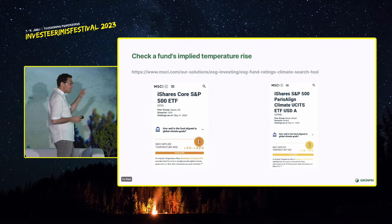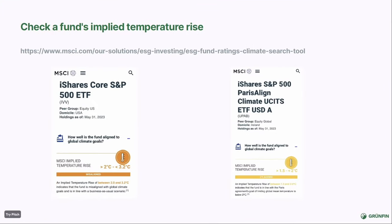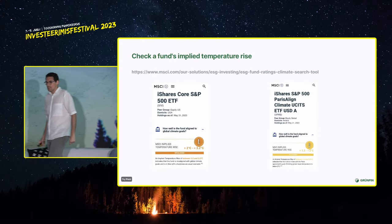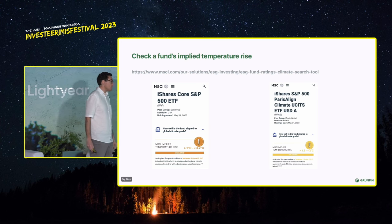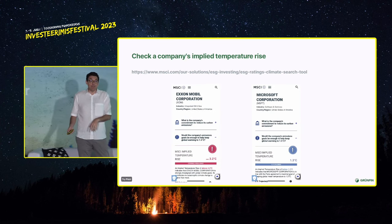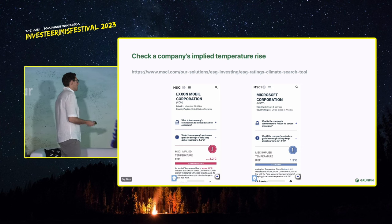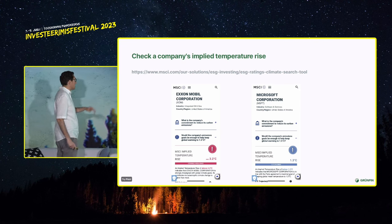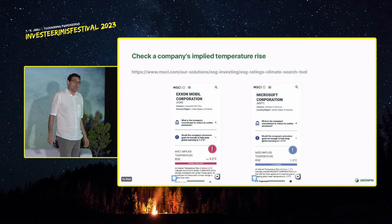There's a really cool website by MSCI, a third-party data provider, available for free. If you're looking at investing in a fund or you own a fund, you can go to that link and see what the implied temperature rise is of all the companies inside that fund. The S&P 500 shows 2 to 3.2 degrees; the S&P Paris-aligned ETF is in line with 1.5 to 2 degrees. You can also look at individual companies. I chose ExxonMobil — the biggest oil company outside Saudi Arabia — and their implied temperature is 3.2, very disaligned with Paris.